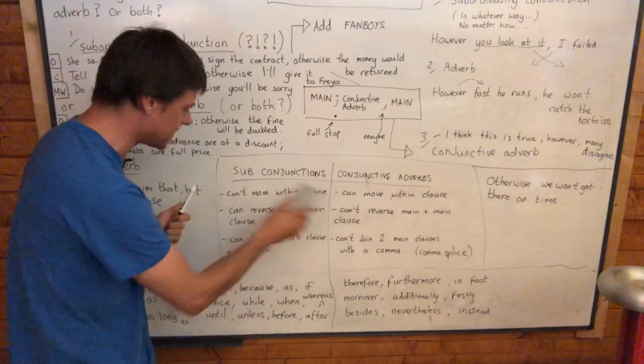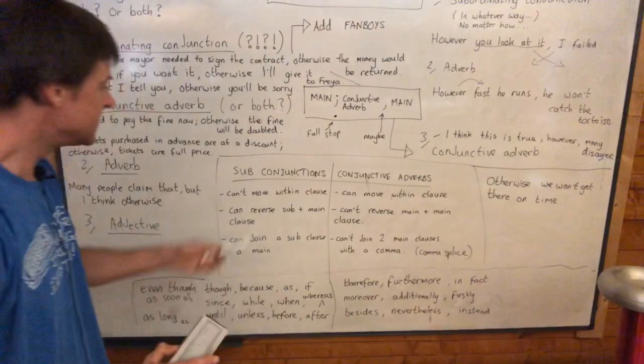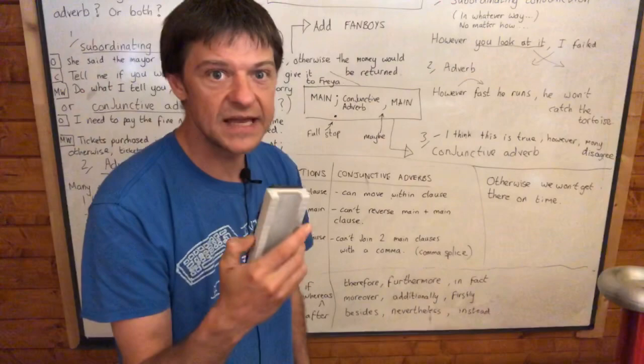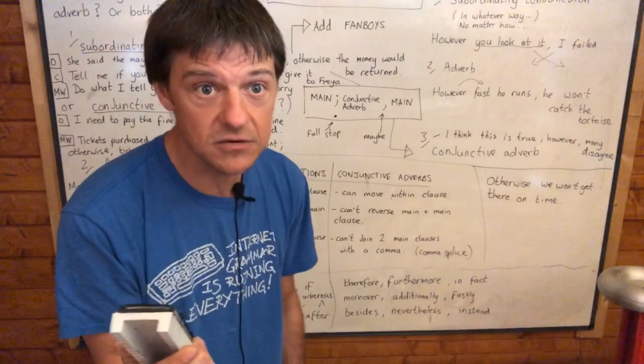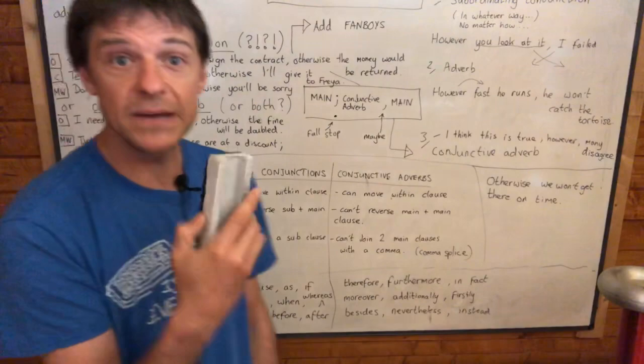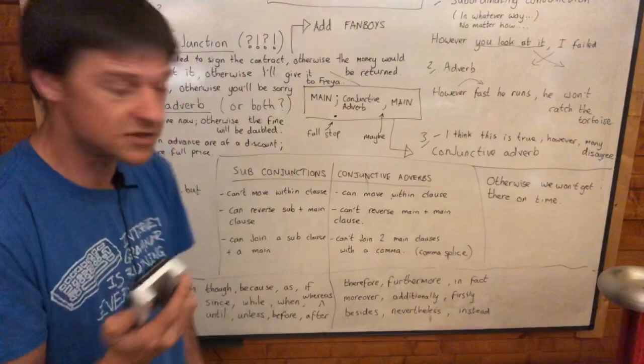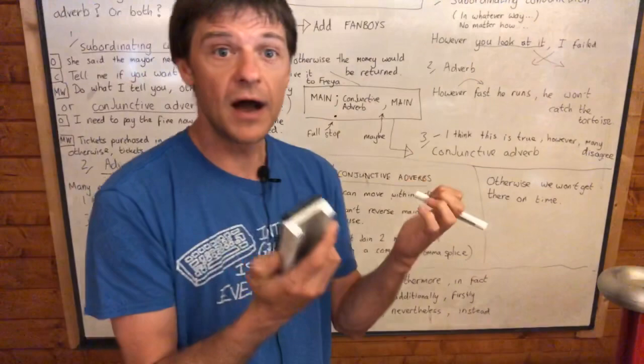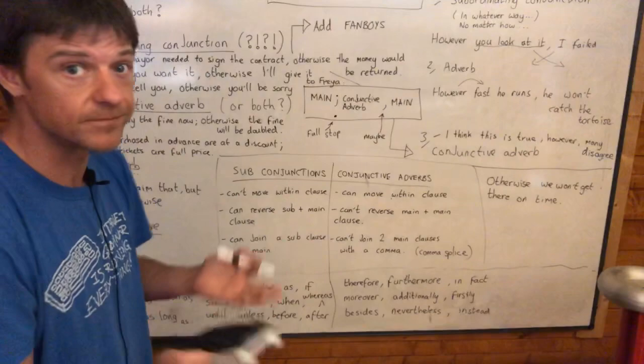The second difference between subordinating conjunctions and conjunctive adverbs is that subordinating conjunctions can't move within the subordinate clause. If you say 'even though it is hot,' you can't say 'it is hot even though' or 'it even though is hot.' You can't move it. Same with 'because it is hot' — you can't say 'it is hot because' or 'it because is hot.' With 'when I get paid I will pay you back,' you can't say 'I when get paid' or 'I get paid when.' Conjunctive adverbs, however, can definitely move within the clause.